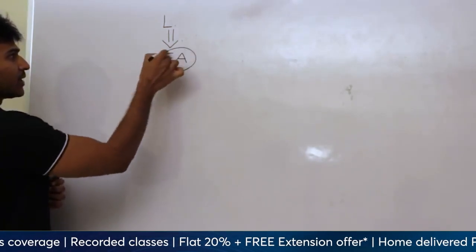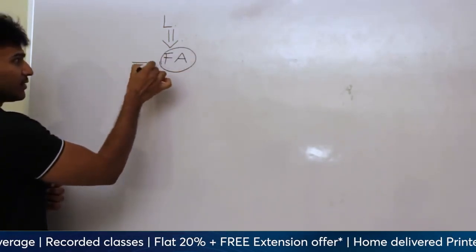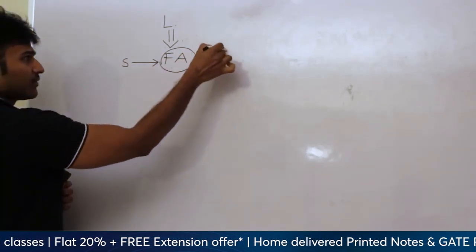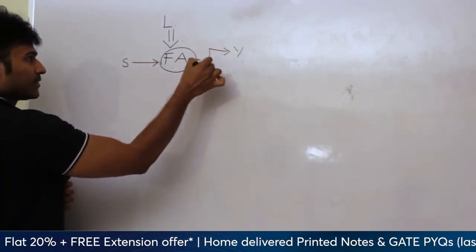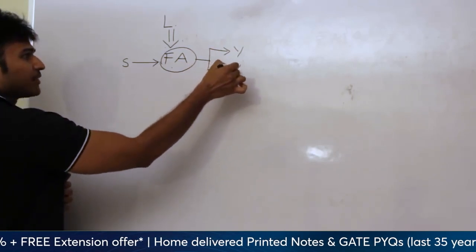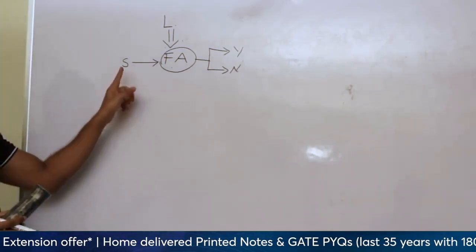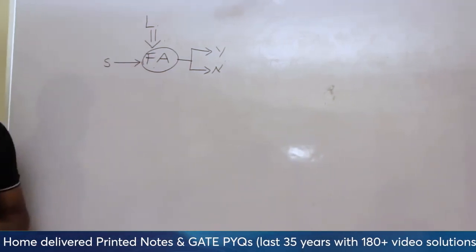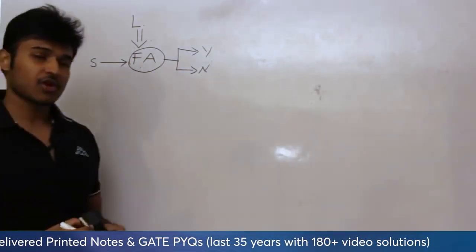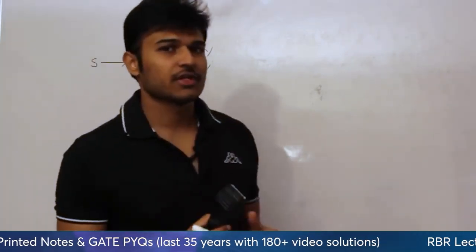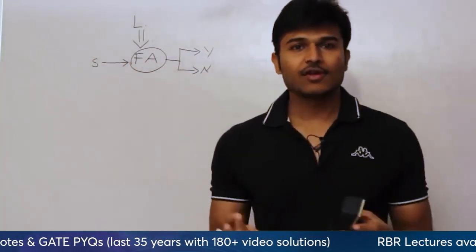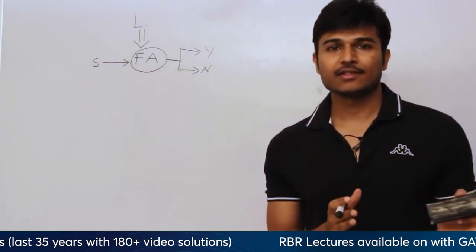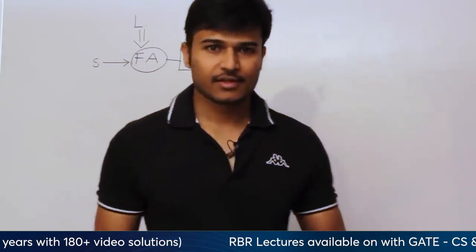Using this finite automata, if I give a string to it, the finite automata will say yes — I accept this string — or no — I reject this string. Which means this string is present in the language or not. Before discussing what a finite automata is and its types, I would like to take a small example and discuss the definitions later.